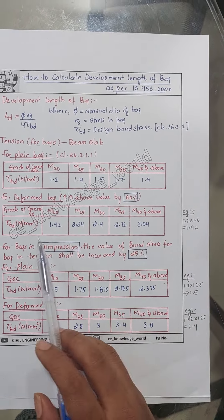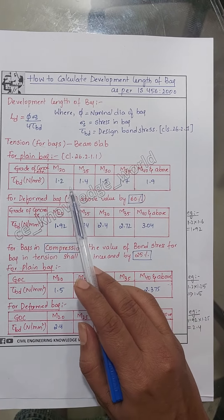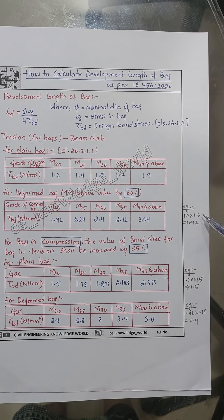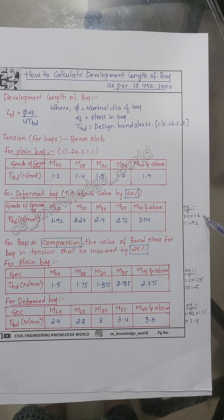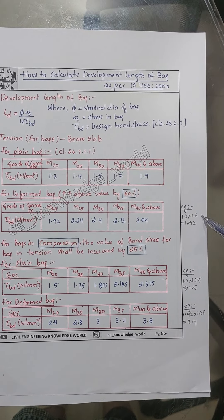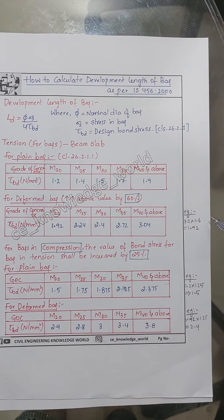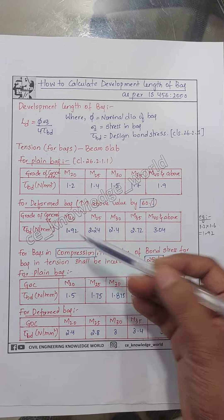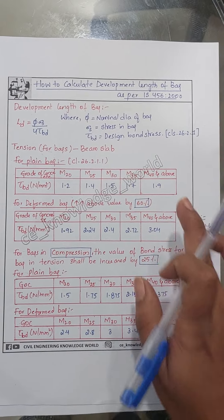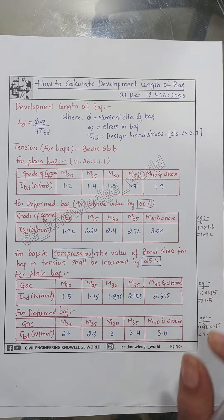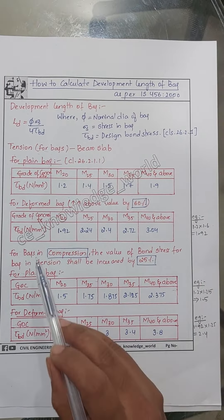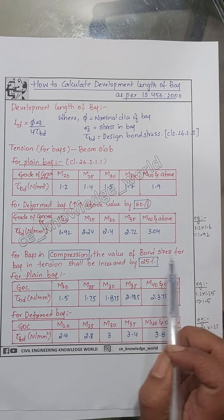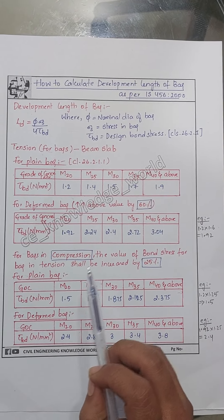For example, increasing 60 percent means we take 1.2 and multiply by 1.6, which gives us 1.92. Similarly, you can calculate for all grades of concrete. For bars in compression, the value of bond stress for bars in tension shall be increased by 25 percent.